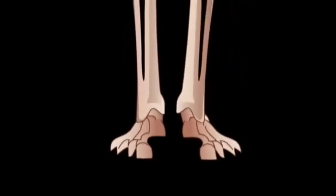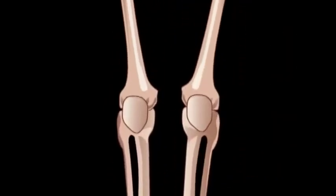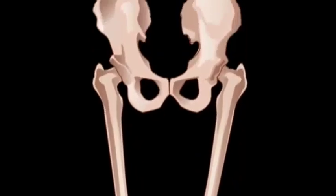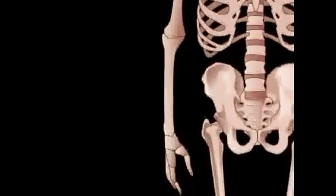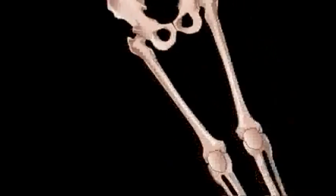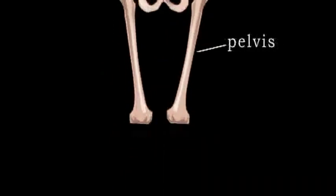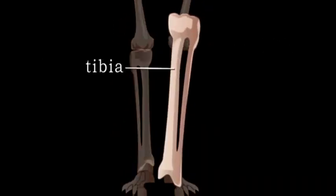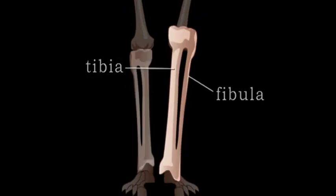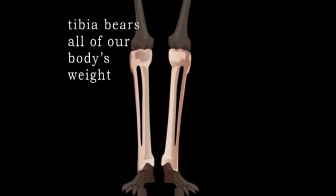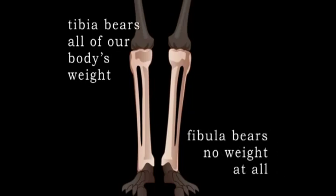The bones of the lower extremities, or legs, are connected to the axial skeleton via the pelvic girdle. The longest, heaviest, and strongest bone in the body is the femur, commonly called the thigh bone. At one end it is connected to the pelvis, and at the other end to the lower leg, which is made up of the tibia, or shin bone, and fibula. The tibia bears all of our body's weight; the fibula bears no weight at all.